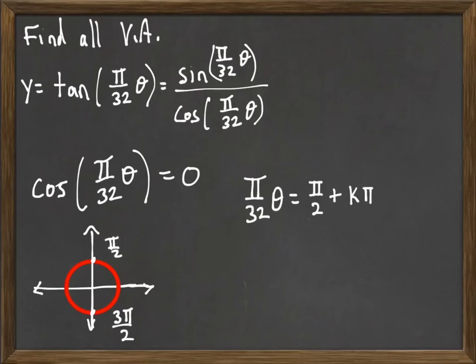And that's going to involve multiplying by the reciprocal 32 over π. Now, when we multiply by 32 over π, the π's are just going to cancel out on the right-hand side.